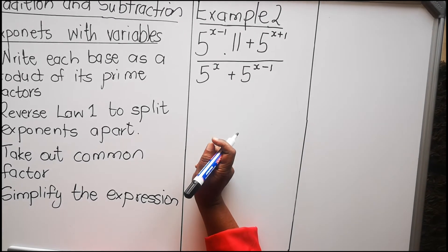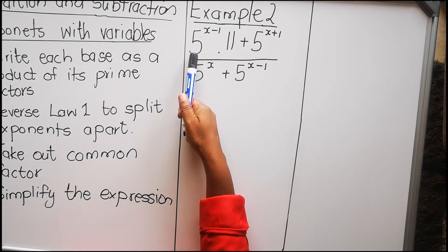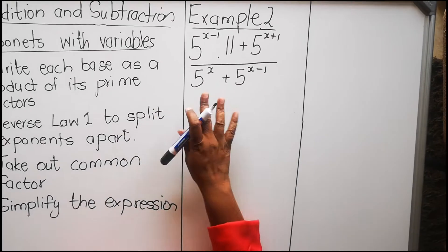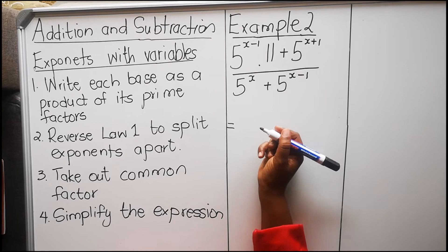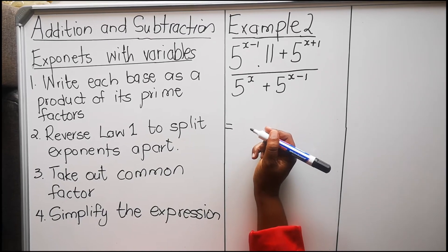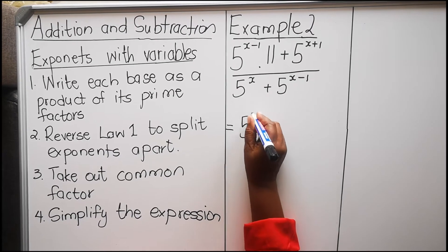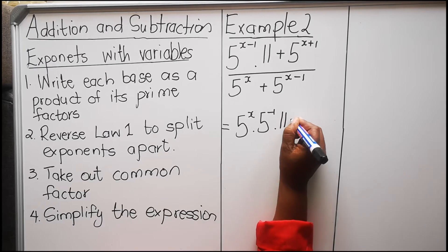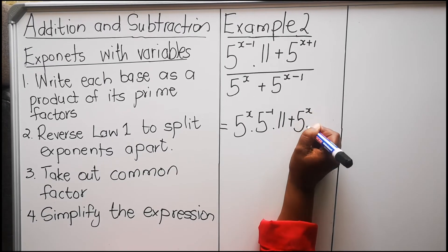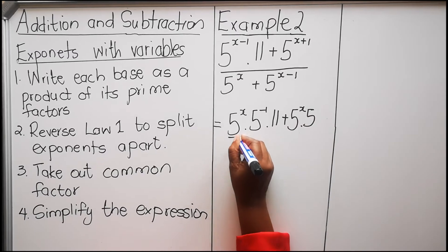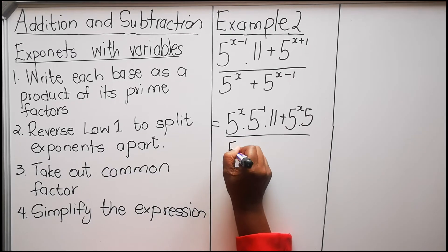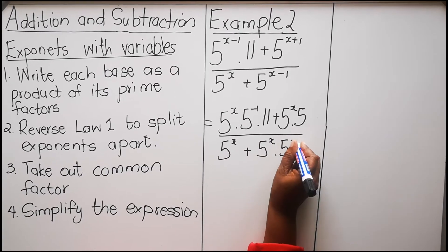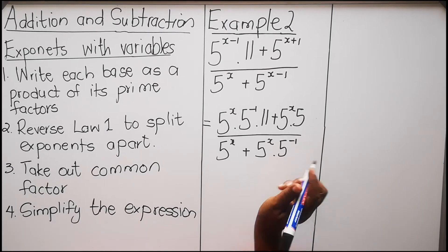When you look at the first terms, each one is a prime number. So we don't have to do step 1 and write them as products of prime numbers because they are all prime numbers. We go straight to step 2. So the expression is: 5 to the power x times 5 to the power minus 1 times 11, plus 5 to the power x times 5 to the power 1, divided by 5 to the power x plus 5 to the power x times 5 to the power minus 1. Then we take out the common factor.